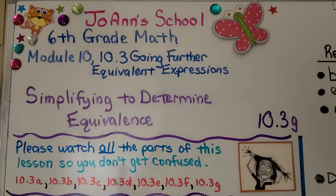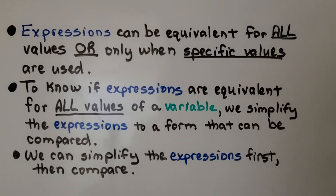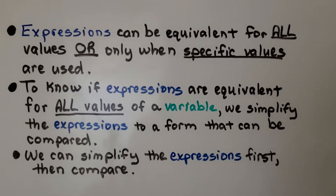Lesson 10.3g: Simplifying to Determine Equivalents. Expressions can be equivalent for all values or only when specific values are used. To know if expressions are equivalent for all values of a variable, we simplify the expressions to a form that can be compared. We can simplify the expressions first, then compare.